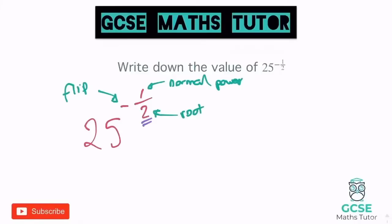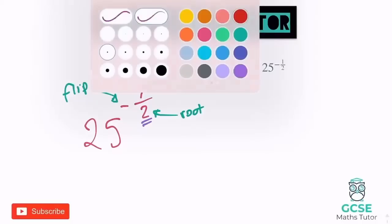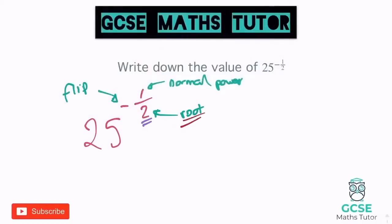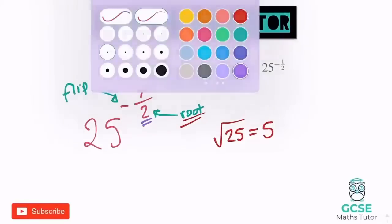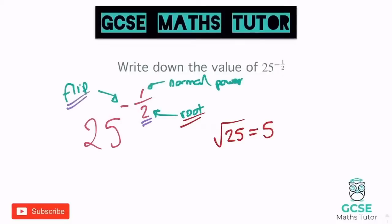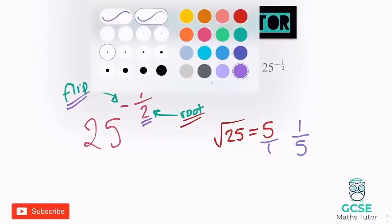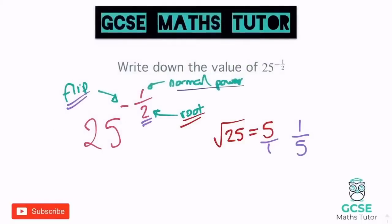So I'll deal with the root first: the square root of 25 is 5. Now I'll deal with the flip — the reciprocal. Flipping 5, which is 5 over 1, gives 1 over 5. The normal power there is just 1, and anything to the power of 1 is just itself. So 1 over 5 is my final answer.